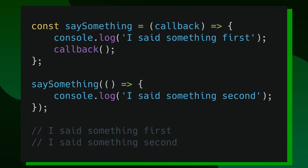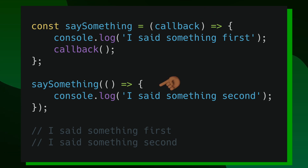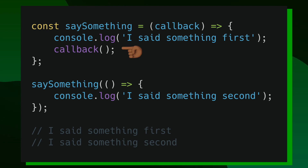You can take a closer look at how this works with the following example. I have a function called saySomething that takes in one argument called callback. Callback is referring to the function that I'm actually going to pass in as a parameter into my saySomething function. Inside of saySomething, I have a console log that says 'I said something first', and then right after that, I'm calling my callback function. The interesting thing about this is that saySomething has no clue what callback is — all it's doing is just executing the function.